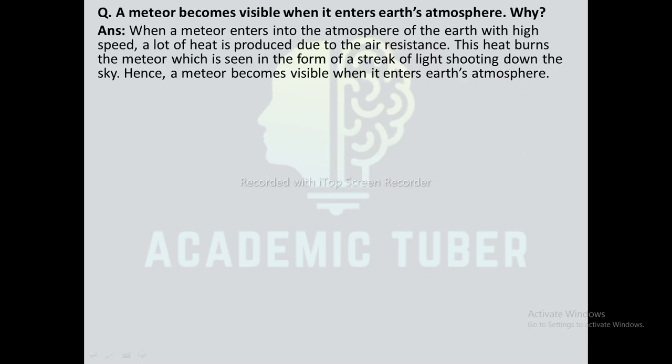Why does a meteor become visible when it enters Earth's atmosphere? When a meteor enters Earth's atmosphere at high speed, a lot of heat is produced due to air resistance. This heat burns the meteor, which is seen in the form of a streak of light shooting across the sky. Hence a meteor becomes visible when it enters Earth's atmosphere.